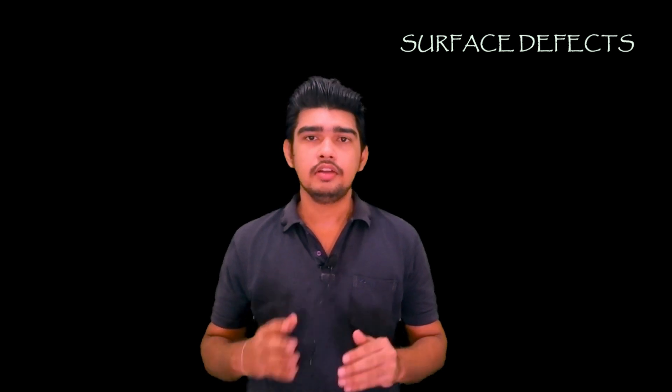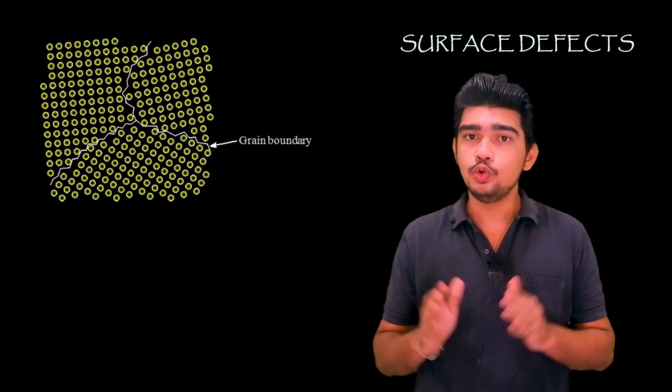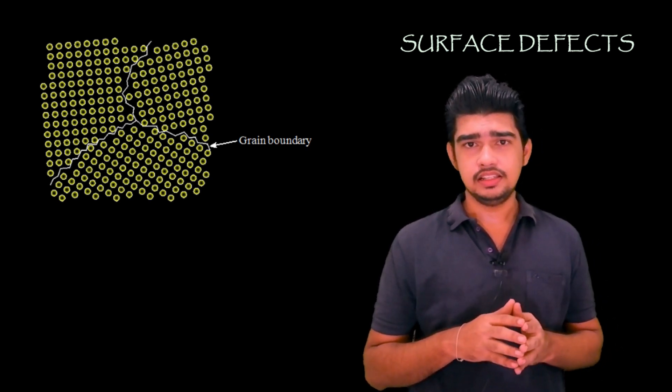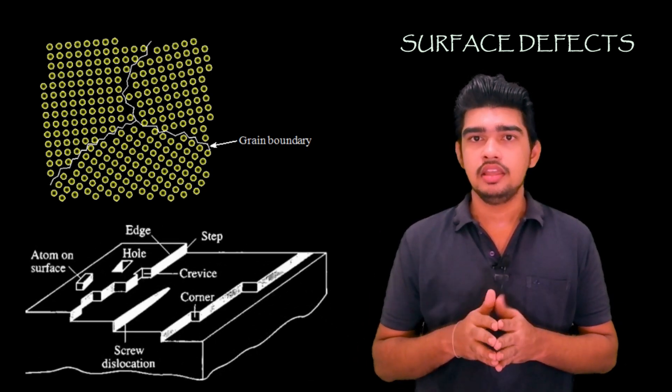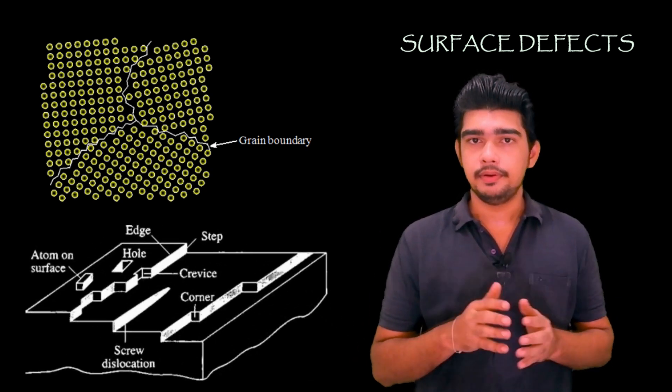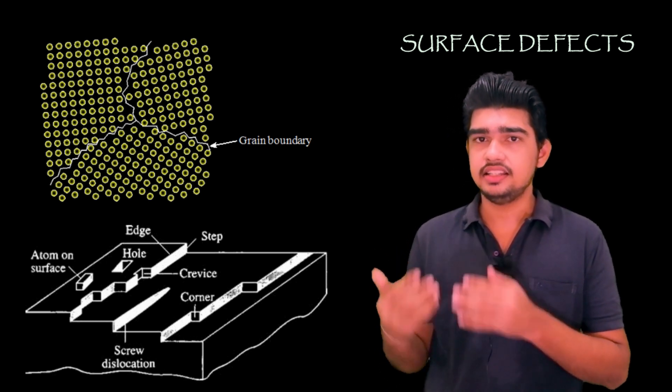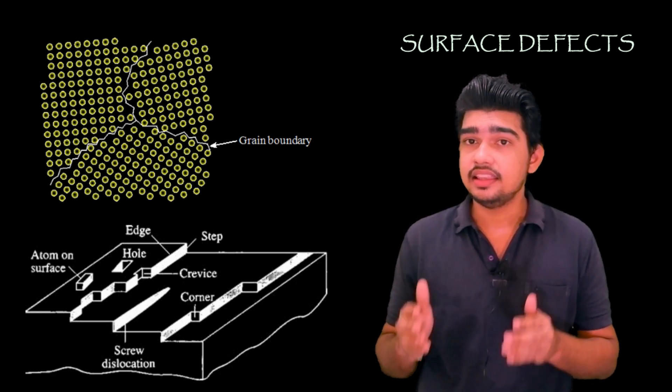Next, let us see about surface defects. Surface defects are imperfections that extend in two directions to form a boundary. The most obvious example is the external surface of a crystalline object. The surface is an interruption in the lattice structure. Surface boundaries can also lie inside the material.